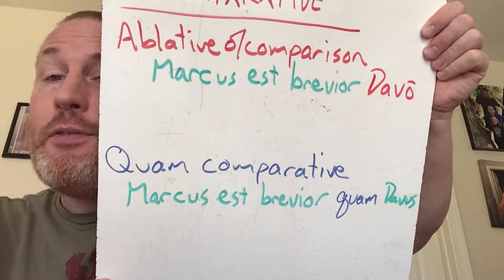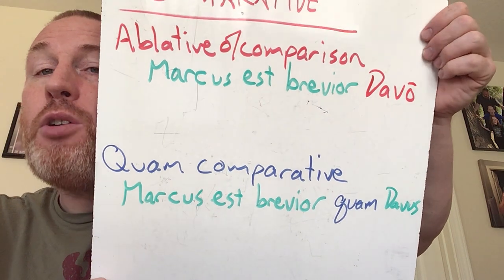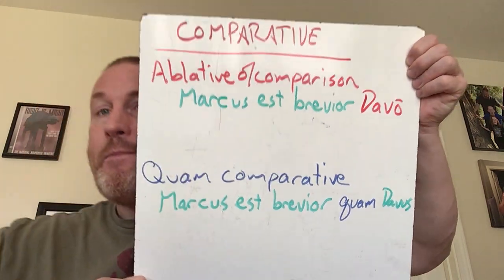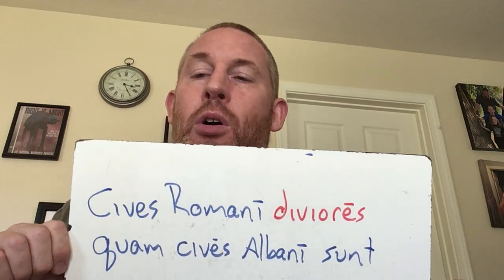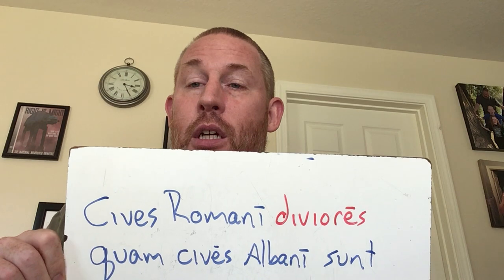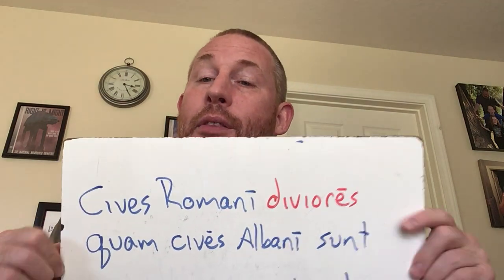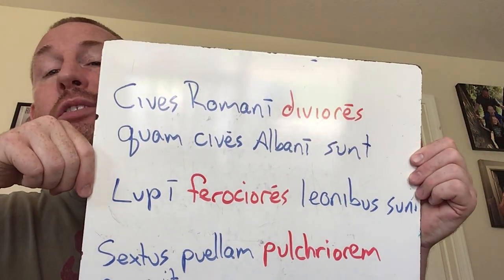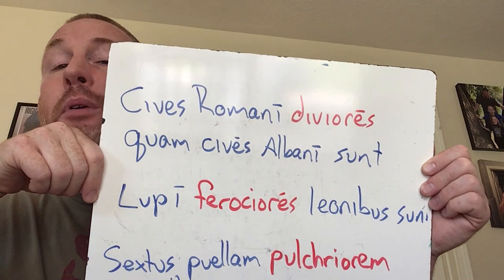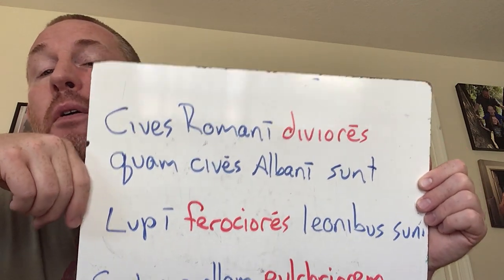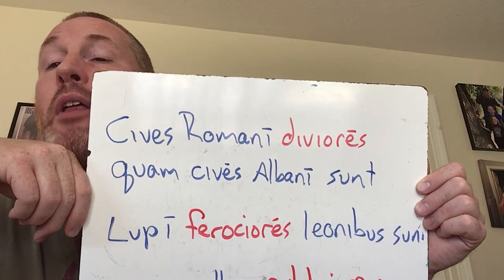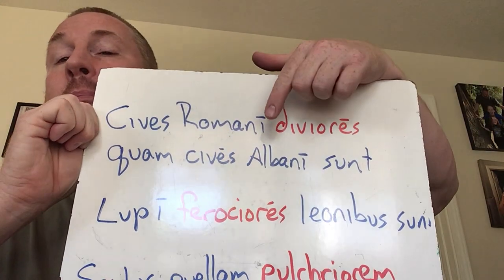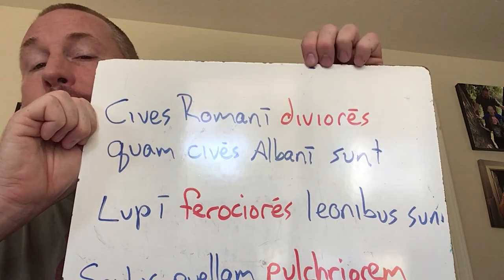But this is when you're using comparatives. So Marcus est brevior quam Davus, or Marcus est brevior Davo — they both mean the same thing. So let's take a look at some sentences so that we have examples. The cives Romani diviores quam cives Albani sunt — the Roman citizens are richer than the Alban citizens. Lupi ferociores leonibus sunt — the wolves are more ferocious than the lions. Up here I use the quam plus the nominative, and down here I use the ablative of comparison. Both work.